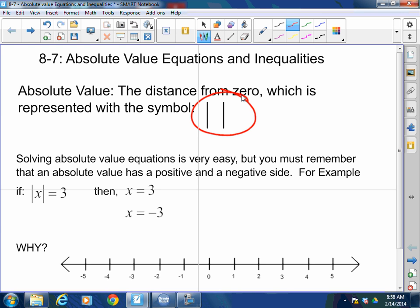The absolute value of a number is always positive. Why? Because it's a distance from zero. You cannot have a negative distance.